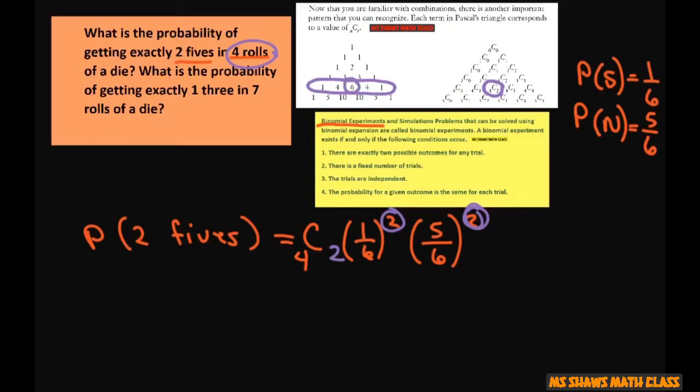So this is six, and then multiply this out. You're going to get one divided by 36 times 25 divided by 36.